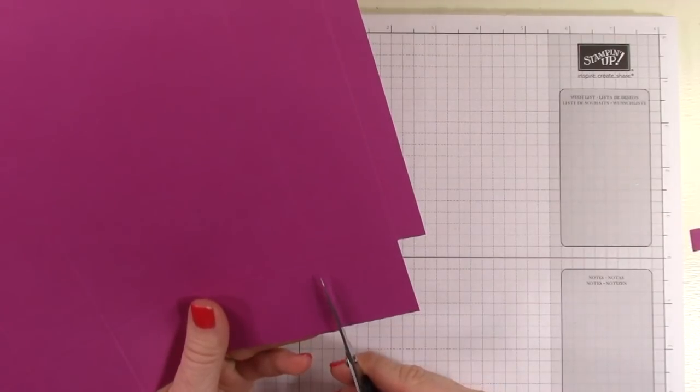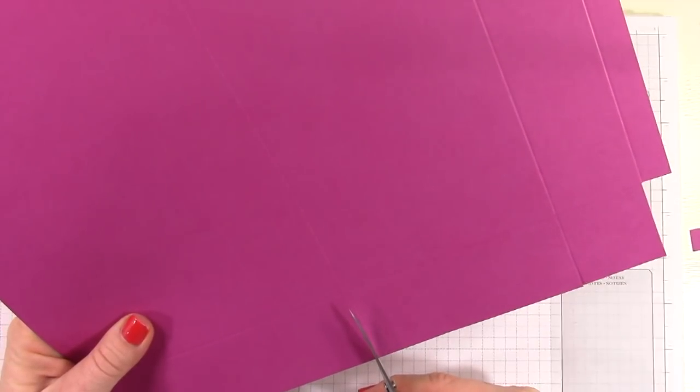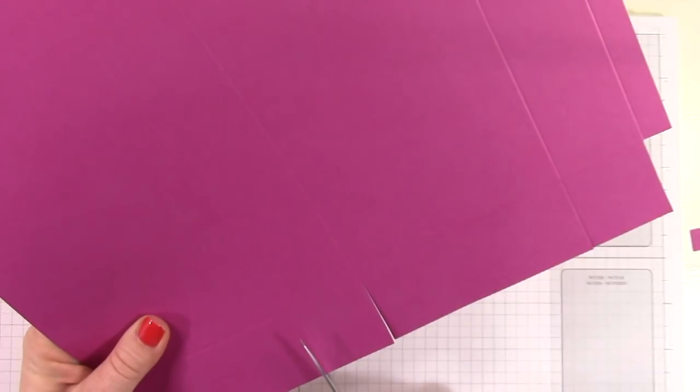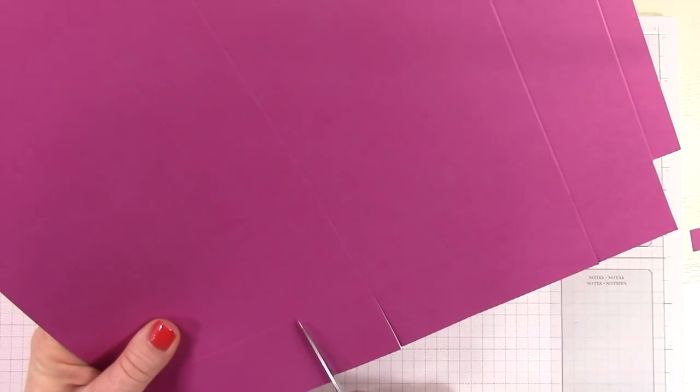Then this is the bottom of the box. You're going to trim along the score line at the bottom of the box all the way up into the bottom score line. So we're creating the flaps for the bottom of the box here. Super simple.